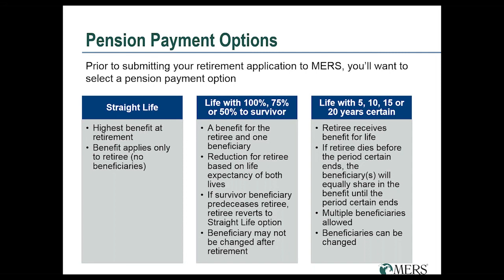The final set of options is life with either a 5, 10, 15, or 20-year certain period. This gives you more flexibility when naming your beneficiary. It's still a lifetime benefit for you, but if you pass away any time within your certain period, pension payments continue to your named beneficiaries for the remainder of that period. Another advantage is that the age of your beneficiaries does not come into play when calculating those benefits, unlike the survivor options where beneficiary age affects the cost of the payment option.